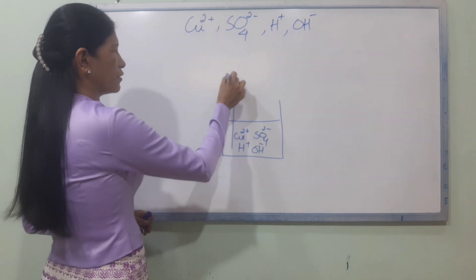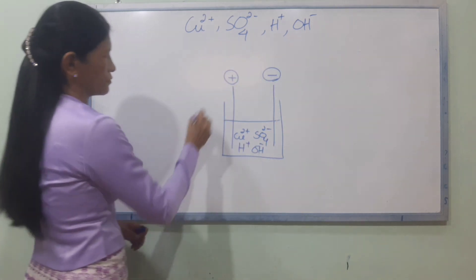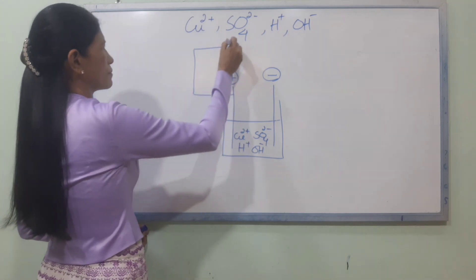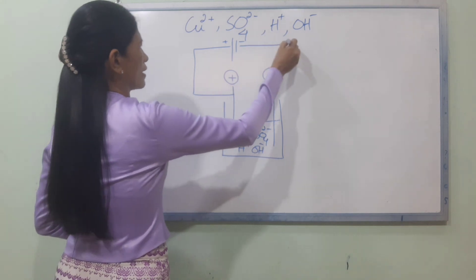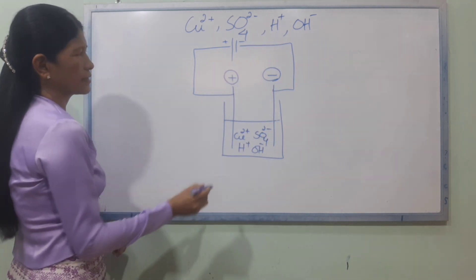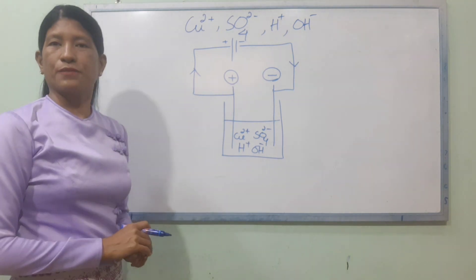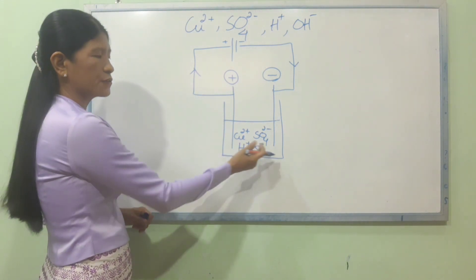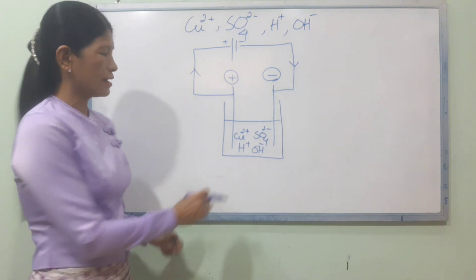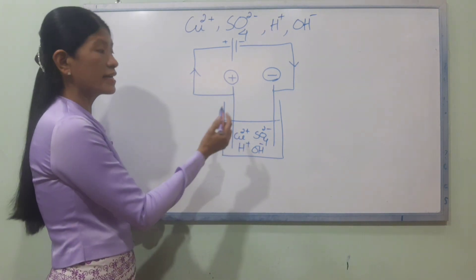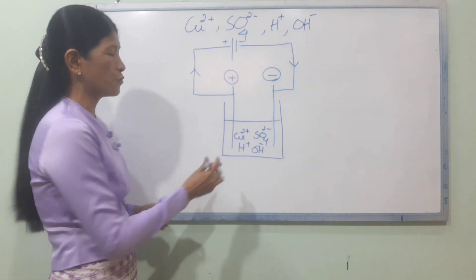The positive ions move toward the negative electrode and the negative ions move toward the positive electrode. On electrolysis, the positive cations include Cu2+ and H+, which move toward the cathode.